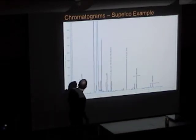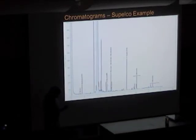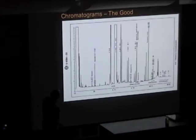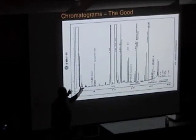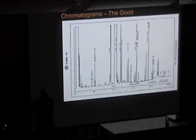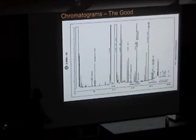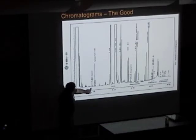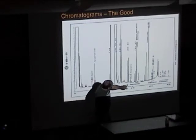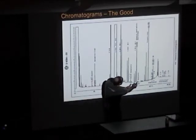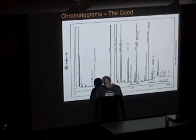The ASTM standard chromatogram — if you reproduce it they take you to jail — shows the same thing: a heptane peak, glycerol, retention time in minutes, esters, monos including monopalmitin, monoglycerides, diglycerides, and tries. So then we get into the fun stuff.